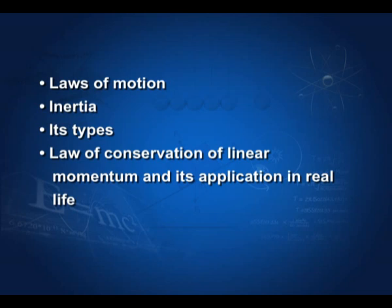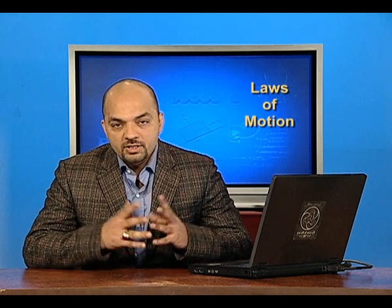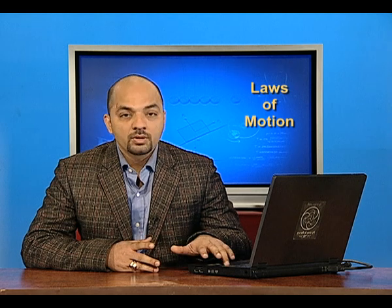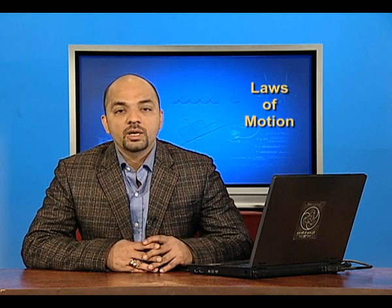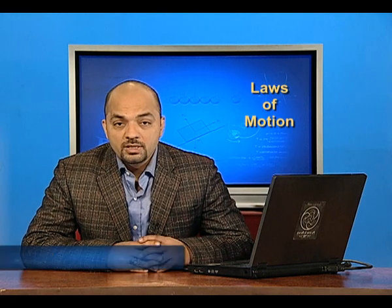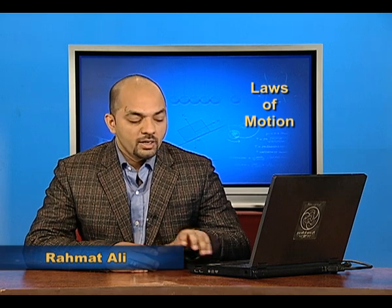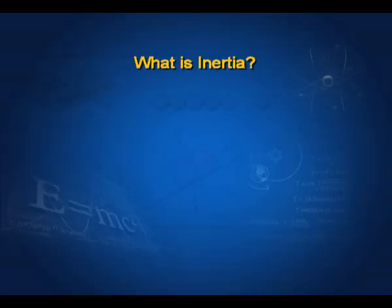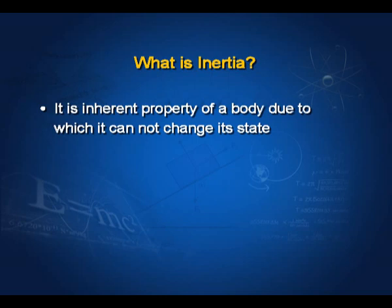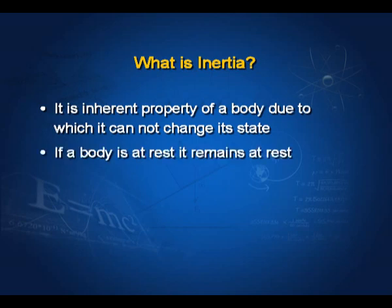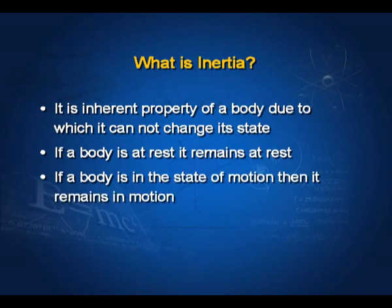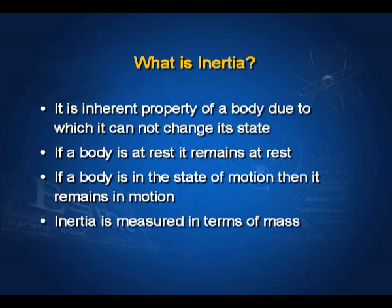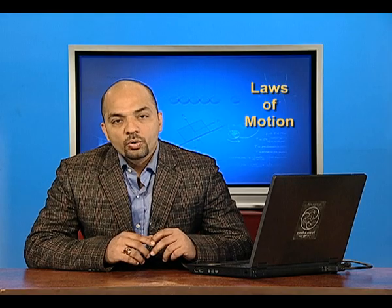We will start from inertia. Let us observe objects around us — can a TV set in your room move on its own? Can any other object in your surroundings change its state? The answer is no. The reason behind it is inertia. Inertia is the inherent property of a body due to which it cannot change its state — if a body is at rest it remains at rest, if it is in motion it remains in motion. Inertia is measured in terms of mass — more is the mass, more will be the inertia.